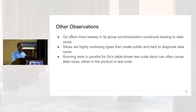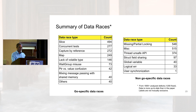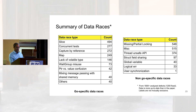There are other observations in the paper. Go offers more leeway in group synchronization constructs, leading to many data races. Slices, which are dynamic arrays, are confusing types creating other kinds of subtle and hard-to-diagnose data races. Running tests in parallel for Go's table-driven testing idiom often leads to many data races. We have two broad categories: language-related and language-unrelated. In the language-related category, slices are involved in many data races, capture by reference is the third most common, and concurrent maps is the fourth.